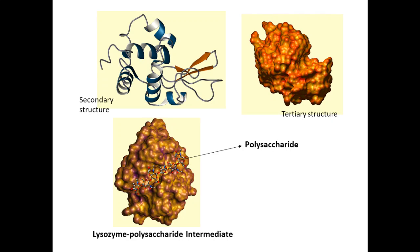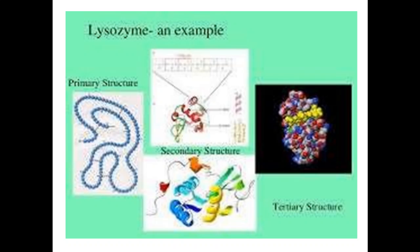The secondary structure consists of random coils and beta sheets — alpha helix and beta sheets are present. The tertiary structure is a compact globular molecule with a long cleft that divides the molecule into two units. In this cleft, the polysaccharide chain mainly gets attached, allowing interaction between the polysaccharide chain and the enzyme lysozyme. The bottom picture shows the interaction between the enzyme and the substrate.